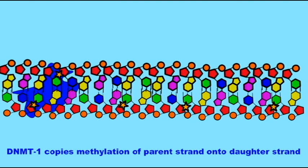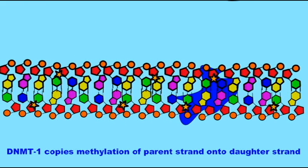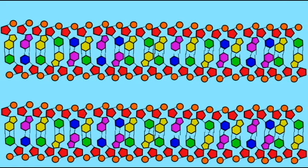In this way, a gene which had been turned off in the parent cell is likely to be turned off in the daughter cell as well, because the daughter strand has the same methylation as the parent strand which resulted in the gene being turned off.